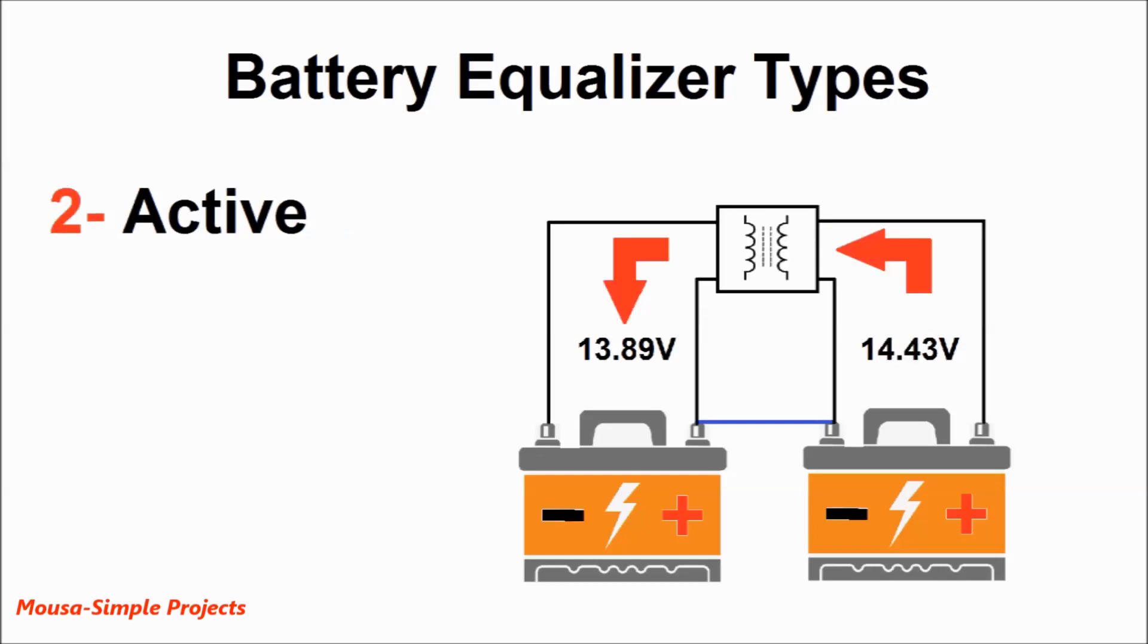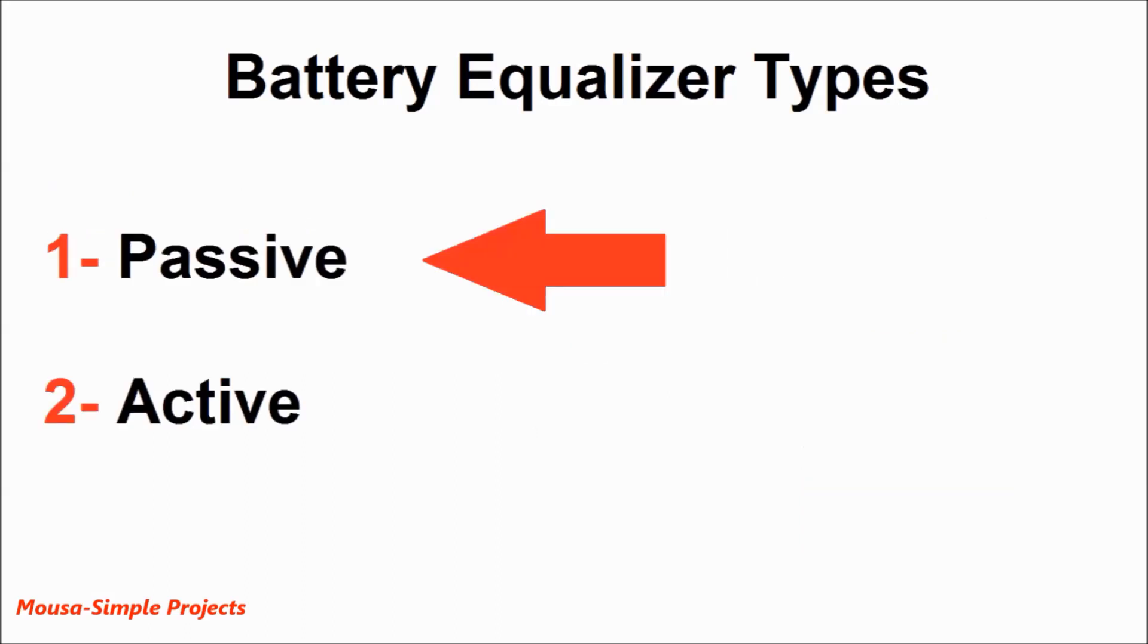But in the active type, we use the excessive energy that is stored in the battery with higher voltage to charge the other battery with less voltage. In this video, I just make the passive one and the active type for another video, maybe in the future.